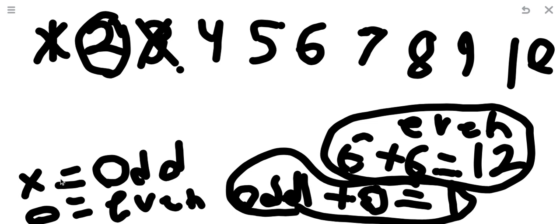Now, 4. We know 1 plus 3 does give you 4. But, there's another way that has the 2 of the same numbers. And I just said it. 2 plus 2 gives us 4. So, 4 is even.